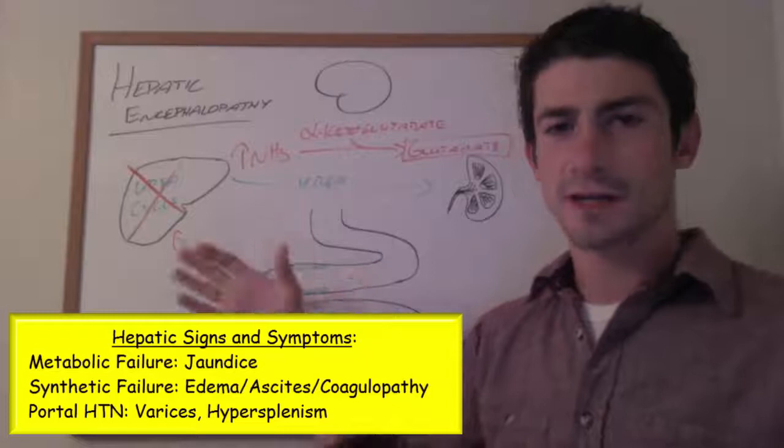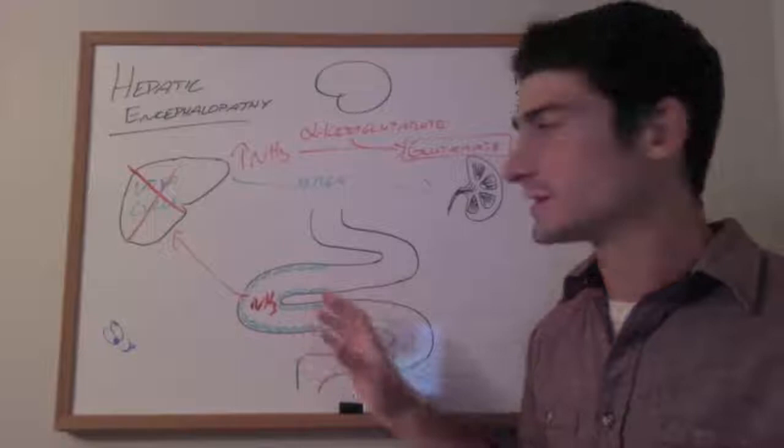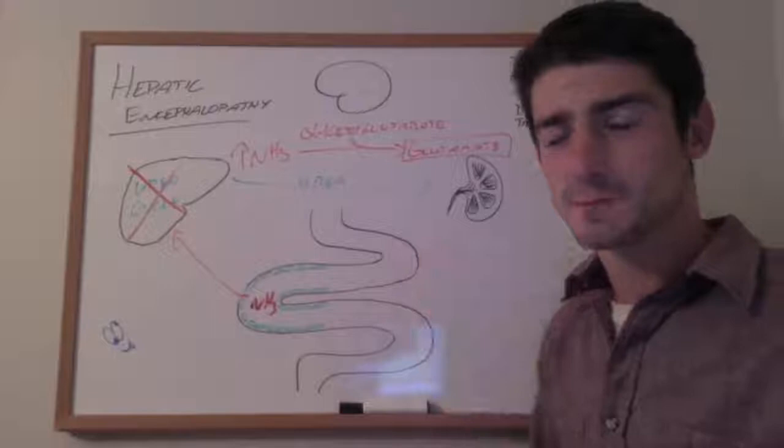There are other things that can cause similar CNS symptoms such as uremic encephalopathy, which is failed excretion of nitrogenous waste products. But you would not expect to see the signs of liver pathology in those cases. You would expect to see more signs of kidney pathology.